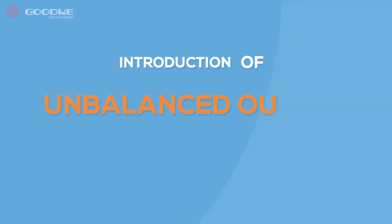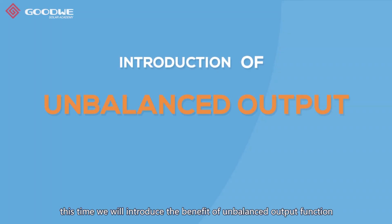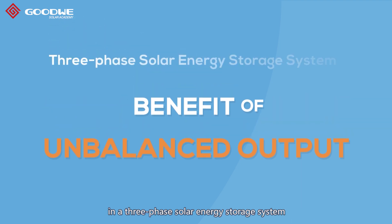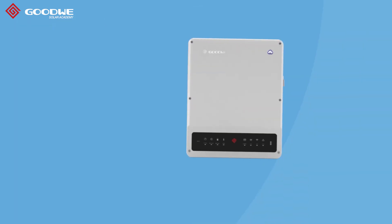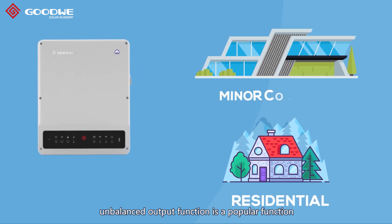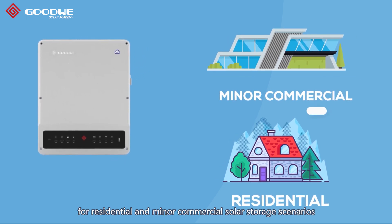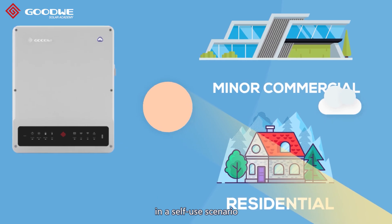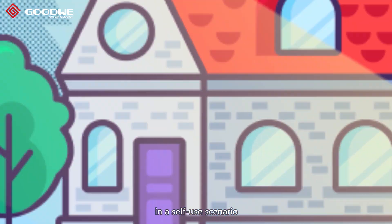Hi everyone. This time we will introduce the benefit of the unbalanced output function in a three-phase solar energy storage system. Unbalanced output function is a popular function for residential and minor commercial solar storage scenarios.